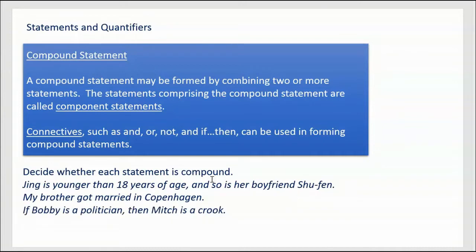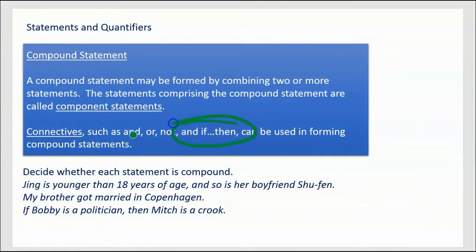Next: 'If Bobby is a politician, then Mitch is a crook.' It's not for us to decide if this is true or false, but it is definitely a compound statement. It uses 'if-then.' 'Bobby is a politician' is definitely a statement, and 'Mitch is a crook' is definitely a statement. So this is definitely compound.